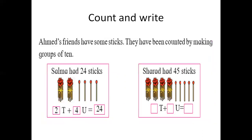Now we will count given objects by making groups. Ahamad's friends have some sticks that have been counted by making groups of 10. Salma had 24 sticks. Here she made groups of 10 matchsticks, so there are 2 groups, each having 10 matchsticks — means 2 tens. And the remaining sticks are 4, which are single matchsticks, so 4 units. So 2 tens means 20, plus 4 units means 4. 20 plus 4 is equal to 24.